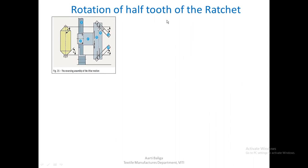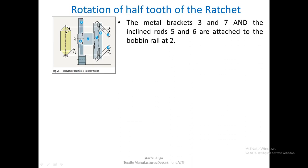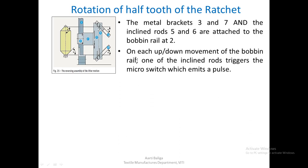With the connections we have seen — ratchet drives the cam and the cam drives the cone drum belt — let us see how the ratchet itself is rotated. The rotation of half a tooth is obtained by this particular mechanism. Metal brackets 3 and 7 and the inclined rods 5 and 6 are attached to the bobbin rail. This entire system moves up and down with the bobbin rail. On each up and down movement, one of the inclined rods — either 5 or 6 depending on whether the rail is moving upwards or downwards — will strike a micro switch and trigger it, emitting a pulse.